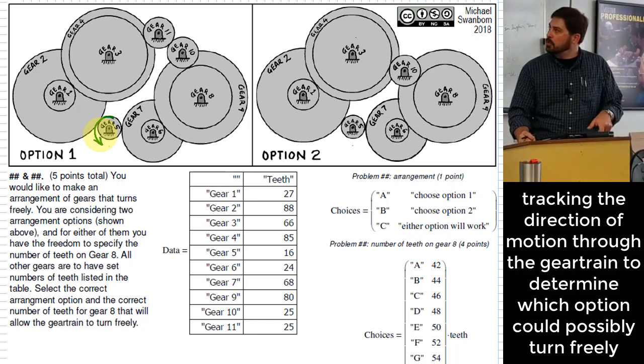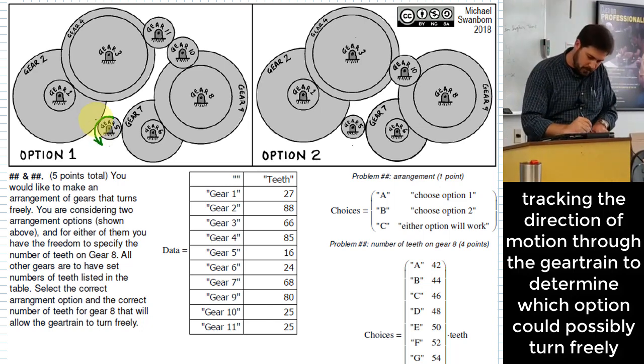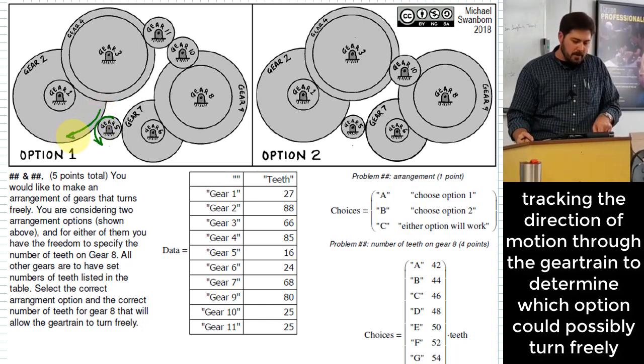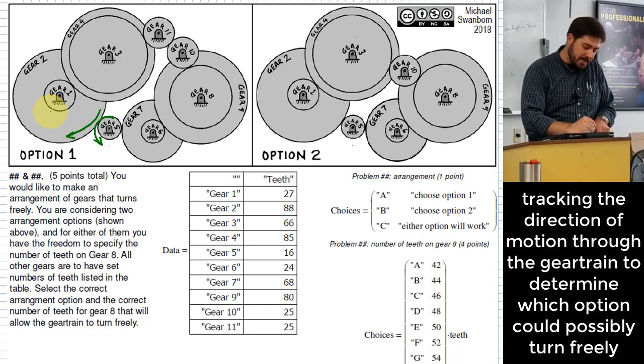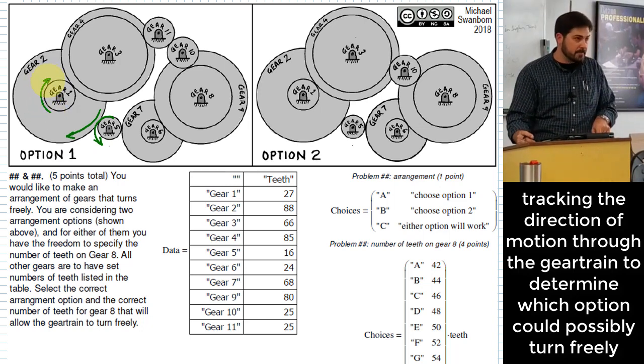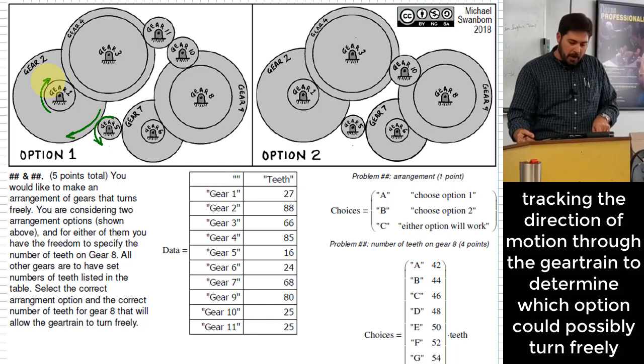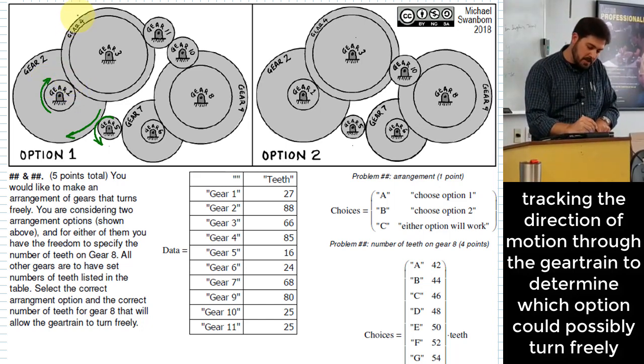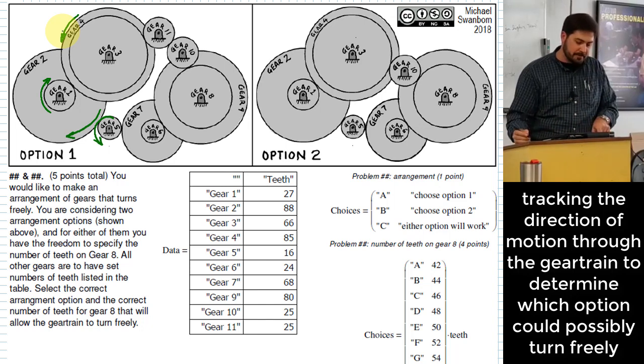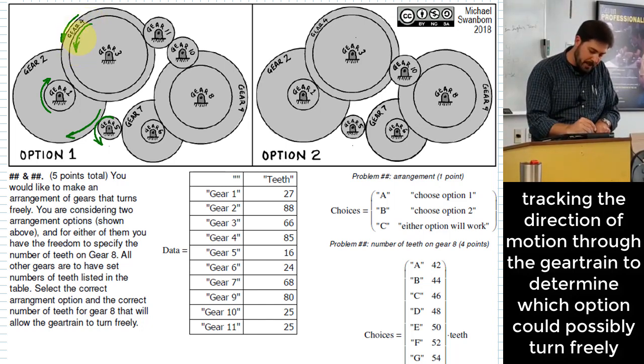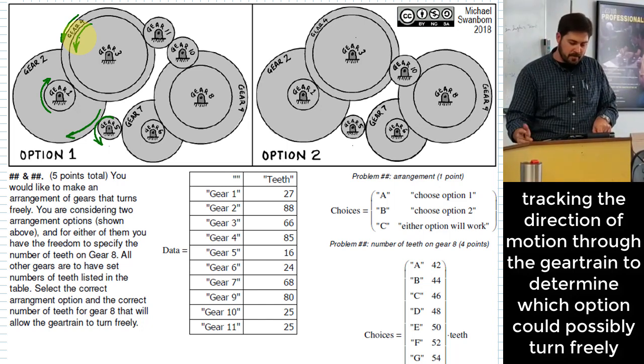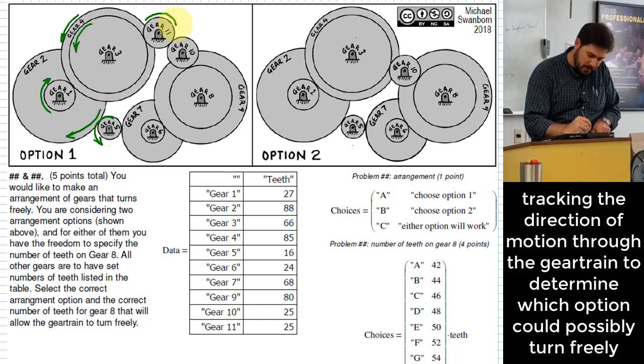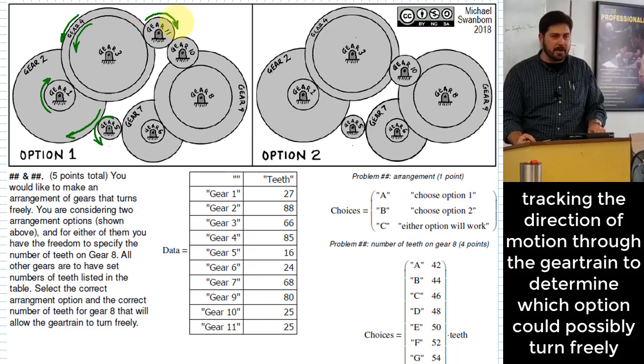If we do that, what direction will gear number two want to turn? Clockwise, right? And that means gear one also wants to turn clockwise because that's a compound gear. So that's also turning clockwise. Then gear one interfaces with gear four. And since it's meshing with it, it changes the direction again and we would be back to counterclockwise, which would also be the direction of gear number three, counterclockwise. So then what direction would gear 11 want to go? Clockwise. And I tell you what, I'm going to stop there and now I'm going to chase it from the other end.